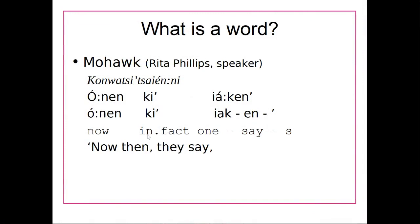One way to look at what a word is — which might help when looking at other languages, since we already have a good sense of what a word is in English — is to see when there is a pause between bits of meaning. For example, we have this phrase meaning 'now, then, they say.' We have the word for 'now,' then a pause, then the word for 'in fact,' then a pause, then the word for 'one says.' So in Mohawk, since there are pauses between these bits of meaning, we can tell that they are different words.